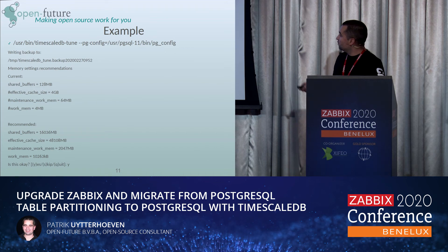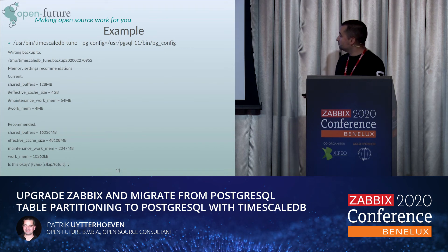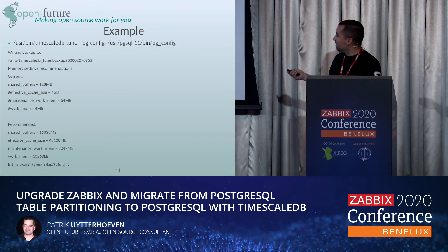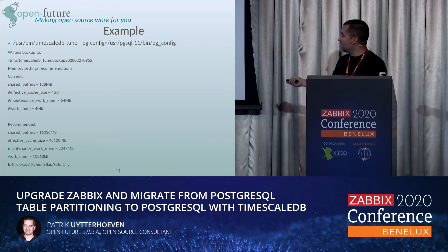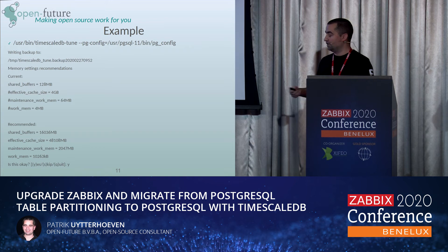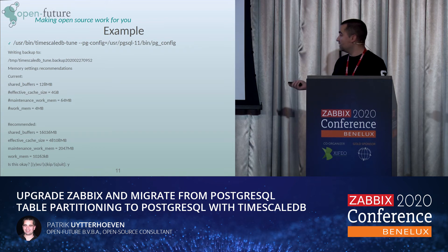Here is an example of running the TimescaleDB tuning parameters. You provide the path to your configuration file, it reads your parameters and proposes new values. In the end it asks yes or no, and then it writes the configuration file and creates a backup in /tmp.